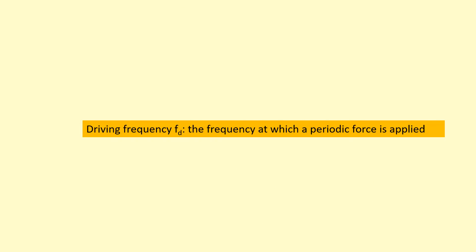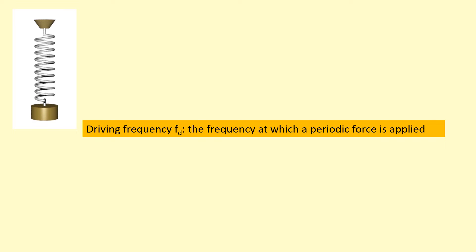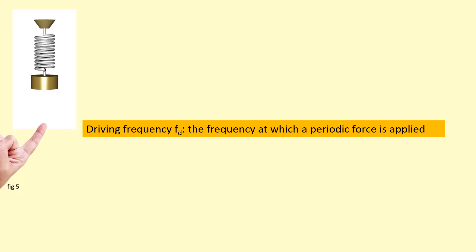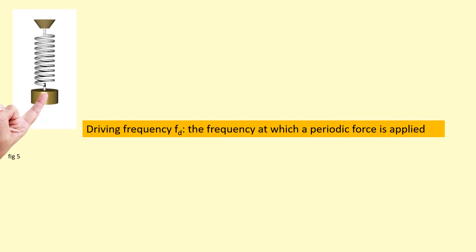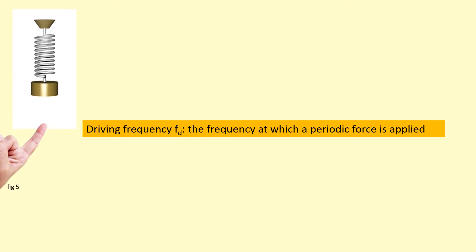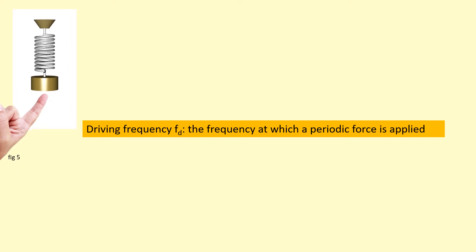Different to the natural frequency, we've got the driving frequency. This is the frequency at which a periodic force is applied to the system. For example, we've got a mass-spring system oscillating up and down, and I can come along and push it at a certain frequency — maybe at five hertz, so that would be the driving frequency; I'm pushing it five times every second.